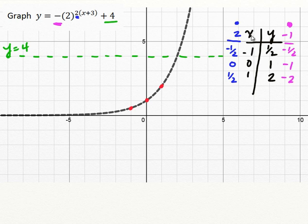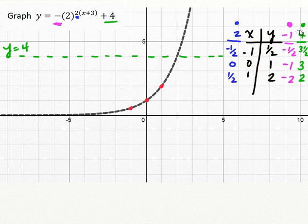The plus 4 is going to increase all the y values by moving them up by 4. Negative 1 half now becomes positive 3 and a half. Negative 1 is now positive 3. And negative 2 is now positive 2. We have added positive 4 in the y direction to all the y points.